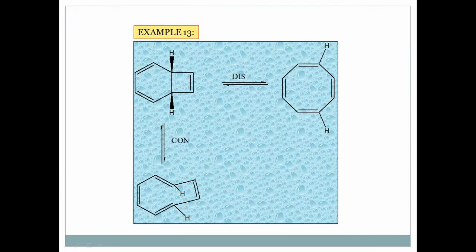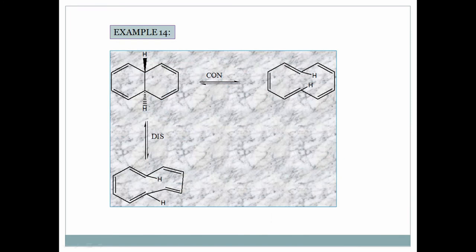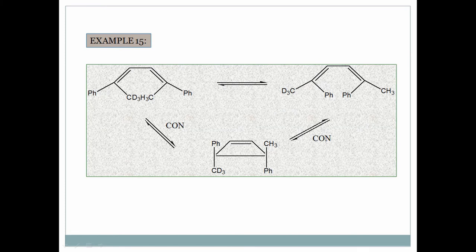Example 13: Observe the hydrogens — both are above the plane, meaning same side. Same side means you apply dis-electrocyclization, which gives opposite sides in the product — both hydrogens end up opposite. Also observe the other hydrogens: they are opposite, so this is electrocyclic ring opening. Con-electrocyclization gives both hydrogens on the same side; dis-electrocyclization gives them on opposite sides. Same applies to another ring-opening example: both hydrogens opposite → con gives opposite, dis gives same side.